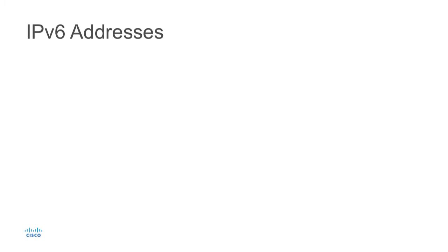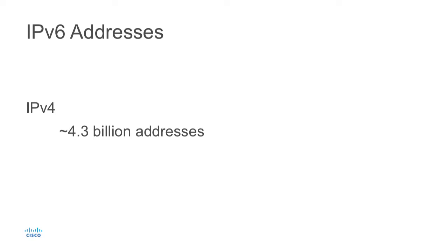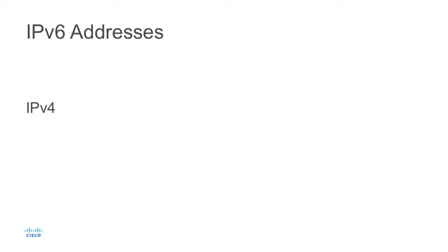Understanding IPv6 is a very important topic because IP version 4 has a very limited lifespan. IP version 4 has about 4.3 billion addresses within that address space. Now, that might seem like a lot of addresses, but really when you look at all the address space that's not usable, there's about 3.7 billion addresses that are usable, so there's a significant number that cannot be assigned to end devices. With the rapid growth of the internet, IPv4 has been grown out of.